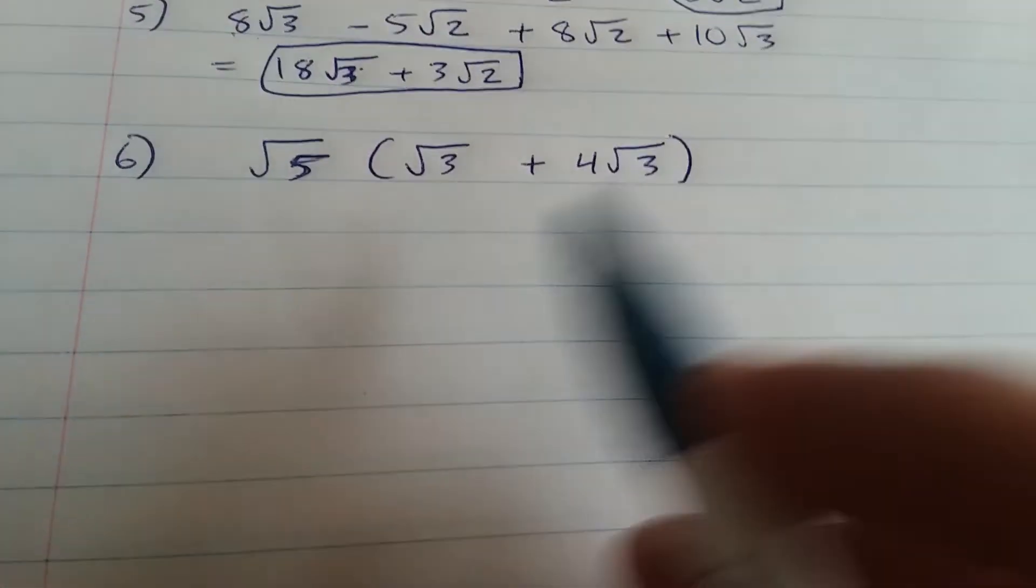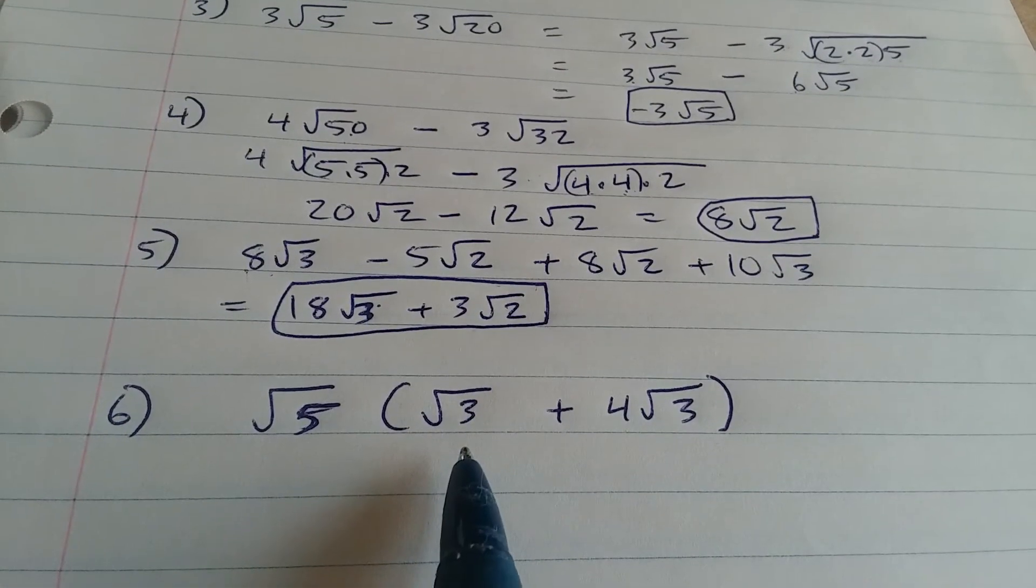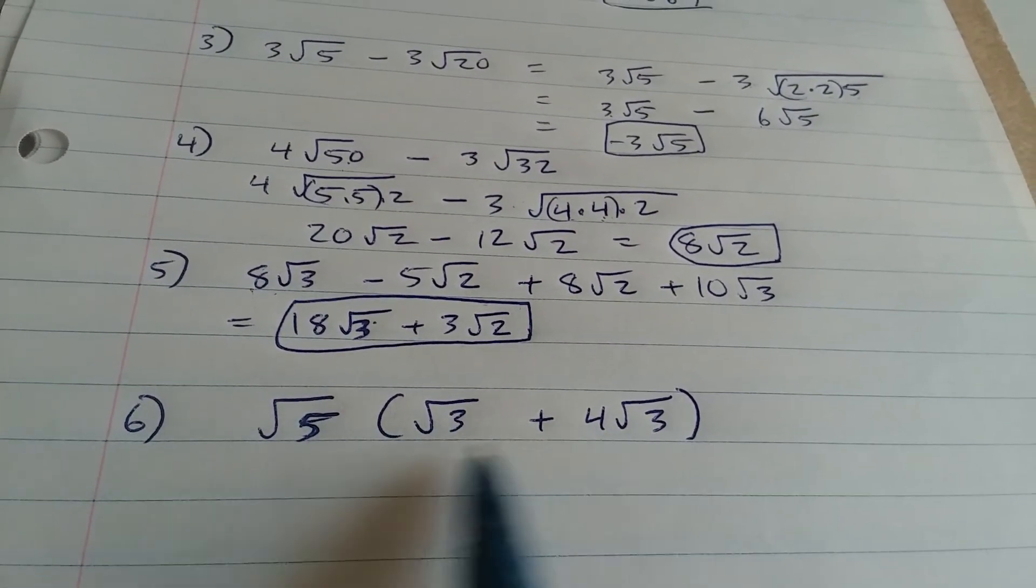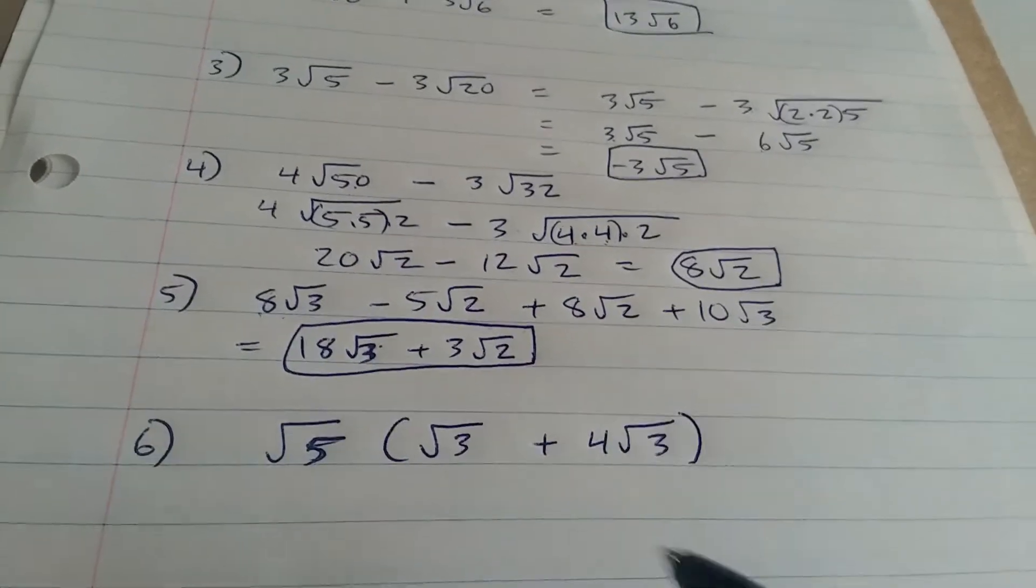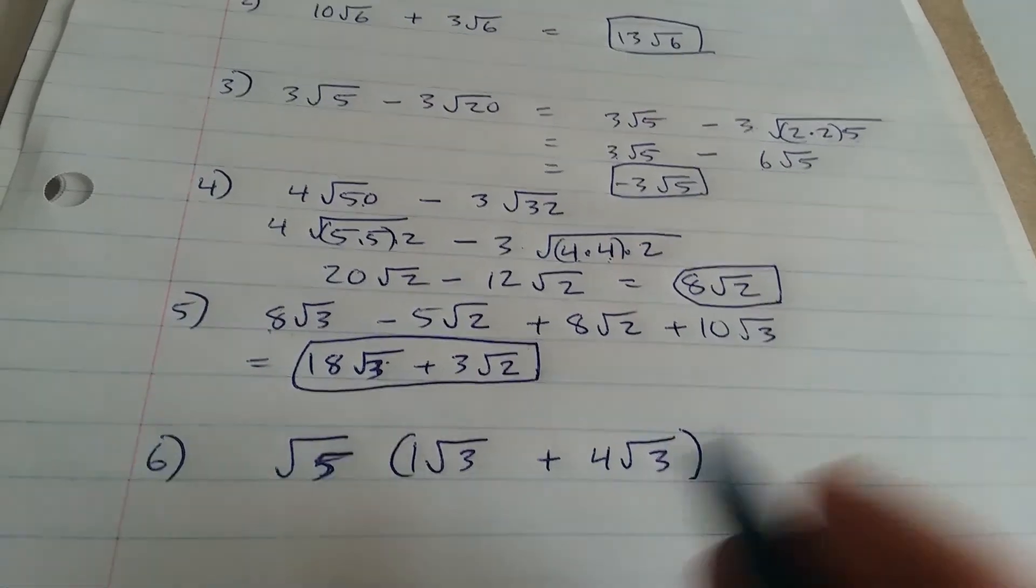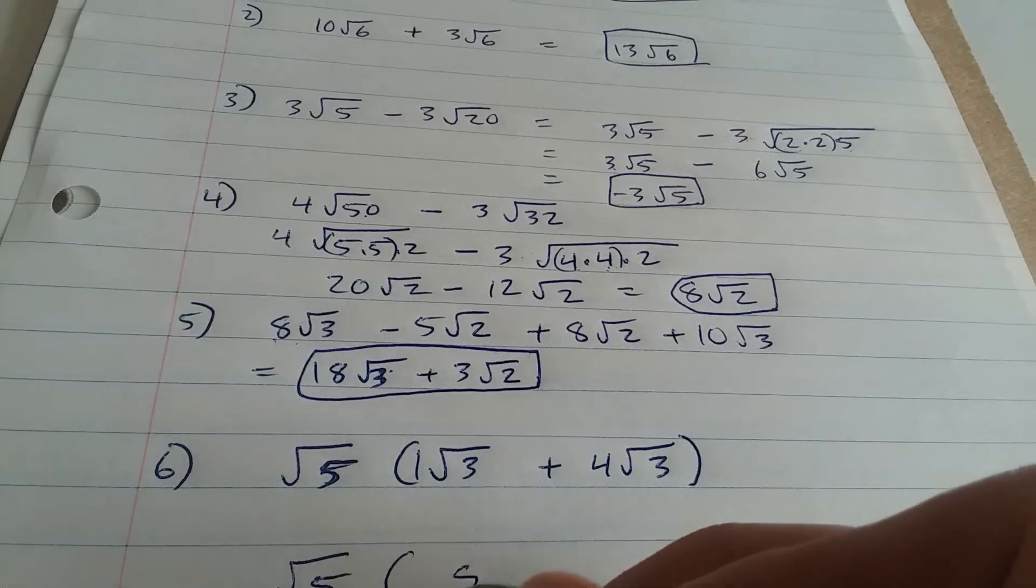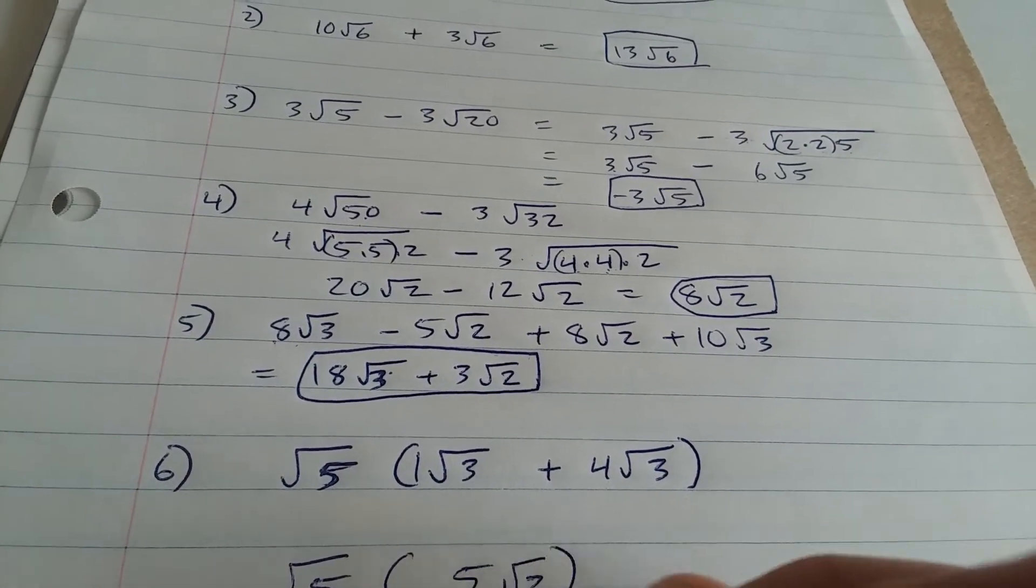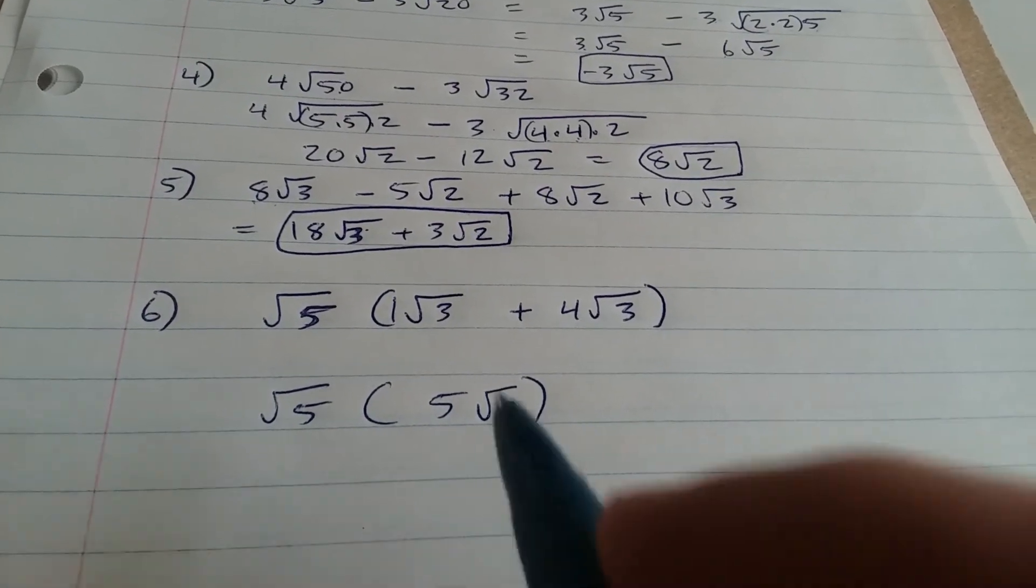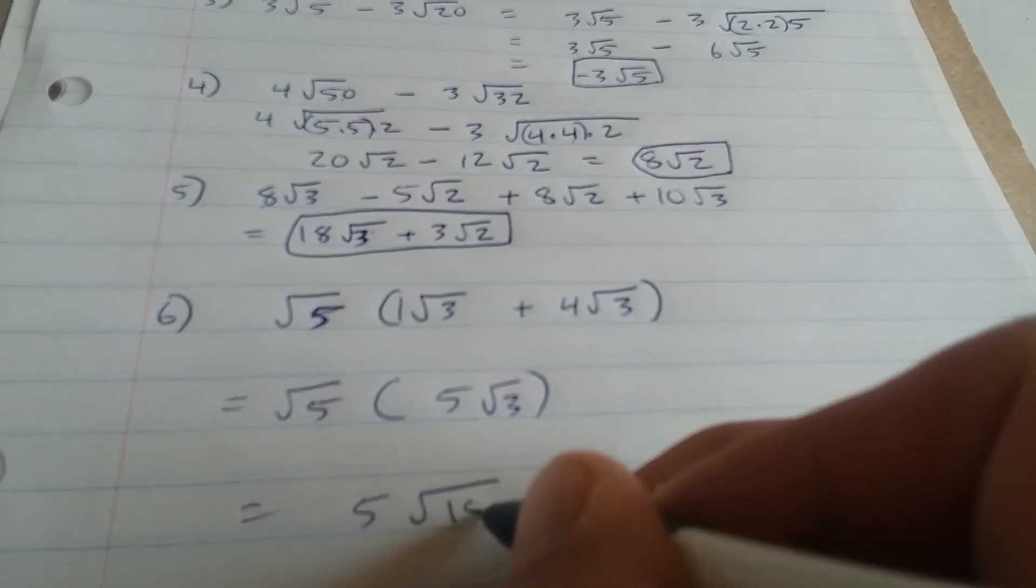And then our last example here. The square root of 5 times the square root of 3 plus 4 root 3. You can start by working inside the parentheses. We really have 1 root 3 here. That's the same thing as 1 root 3. 1 root 3 plus 4 root 3 is 5 root 3. So we have the square root of 5 times 5 root 3. And then you multiply the numbers that are under the root here. So it's going to be 5 times the square root of 15.